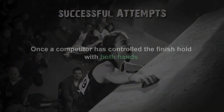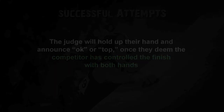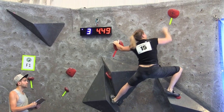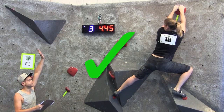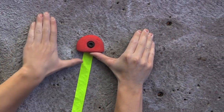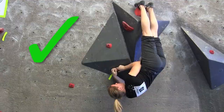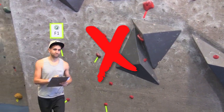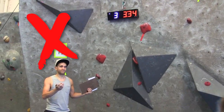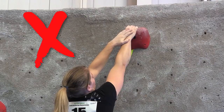An attempt on a boulder is considered successful once a competitor has controlled the finish hold with both hands. There is no specified amount of time required to hold the finish, but the judge will hold up their hand and announce 'OK' or 'top' once they deem the competitor has controlled the finish with both hands. Here are some examples of successful attempts. Remember, two hands must touch the finish hold in control, and slapping the finish hold or holding one hand over top of the other hand does not count.